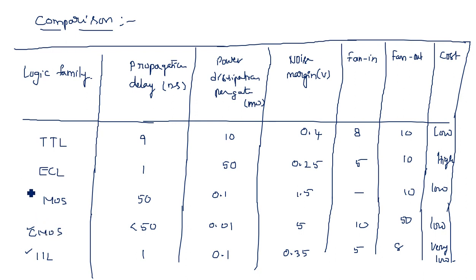Among all these, IIL and CMOS are generally the best suited logic families. However, if you need the fastest device, ECL is preferred. Depending on the situation — whether you need a fastest device or a low power device — you choose either ECL or CMOS. This concludes the comparison table of logic families.